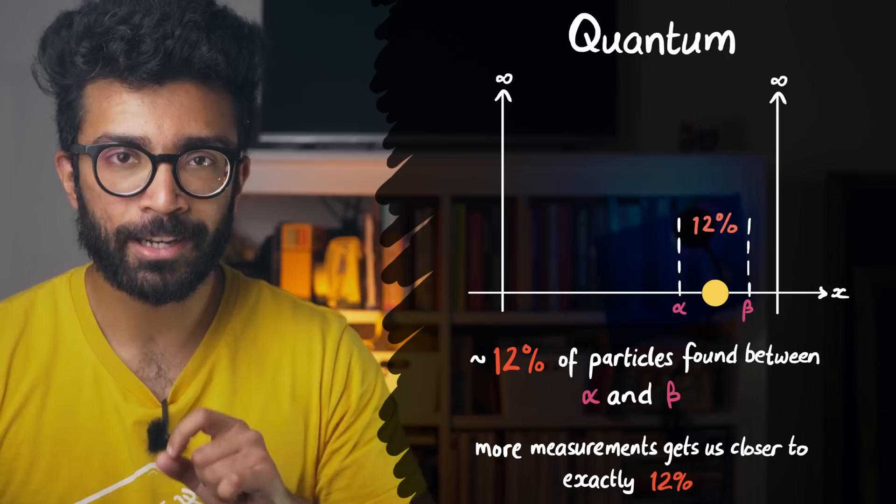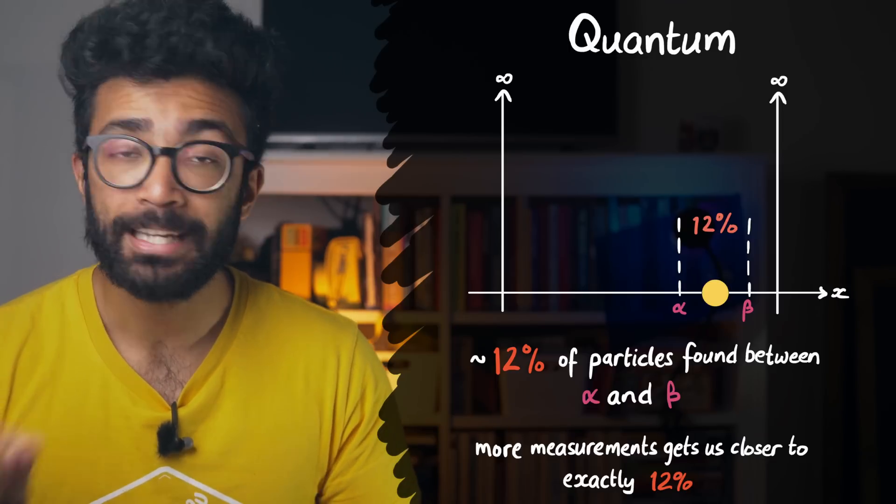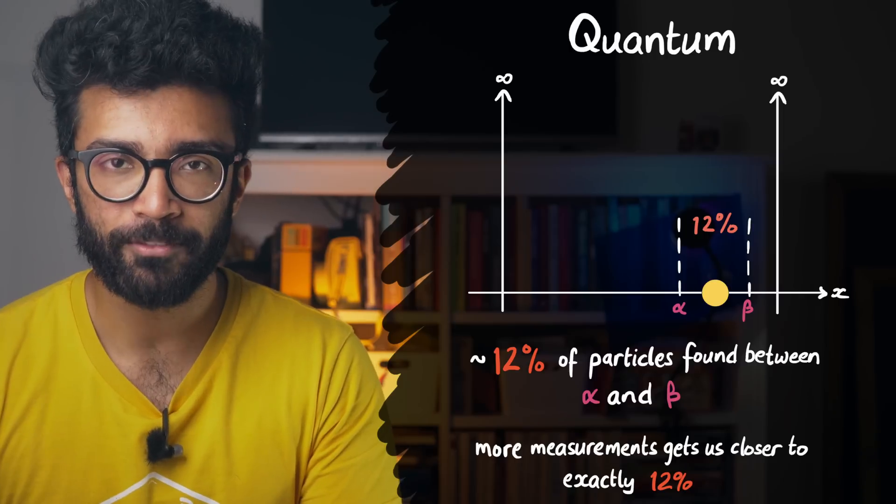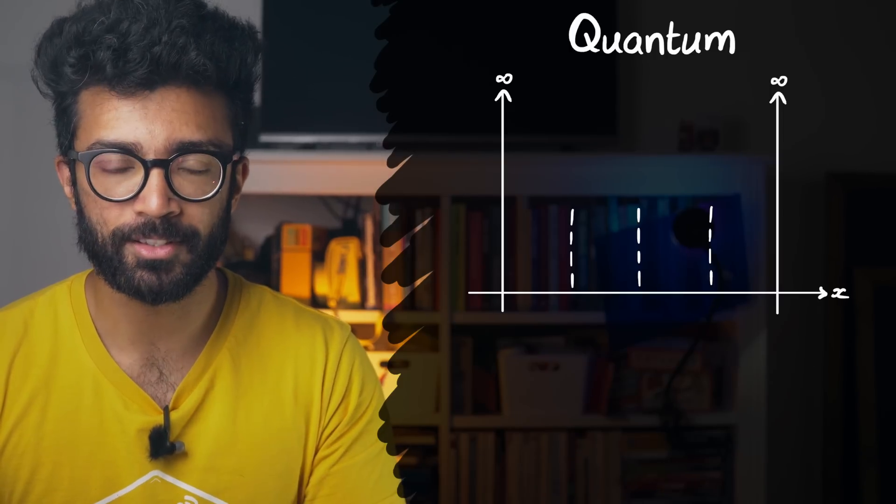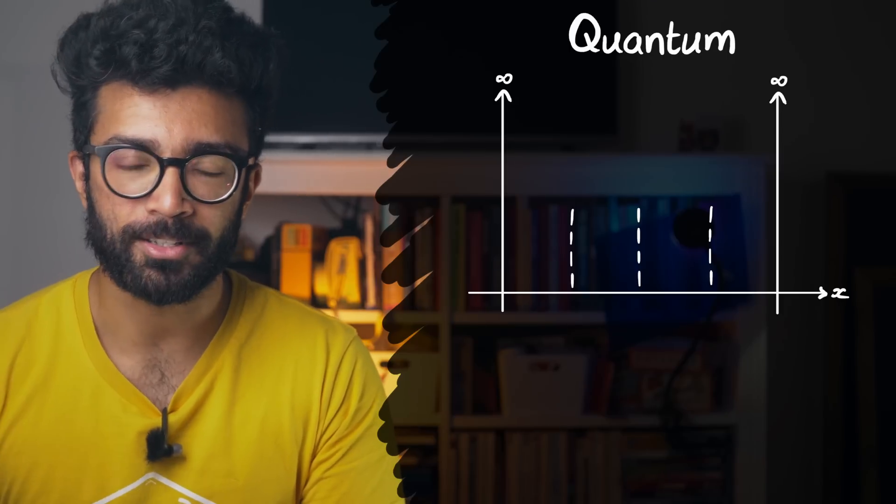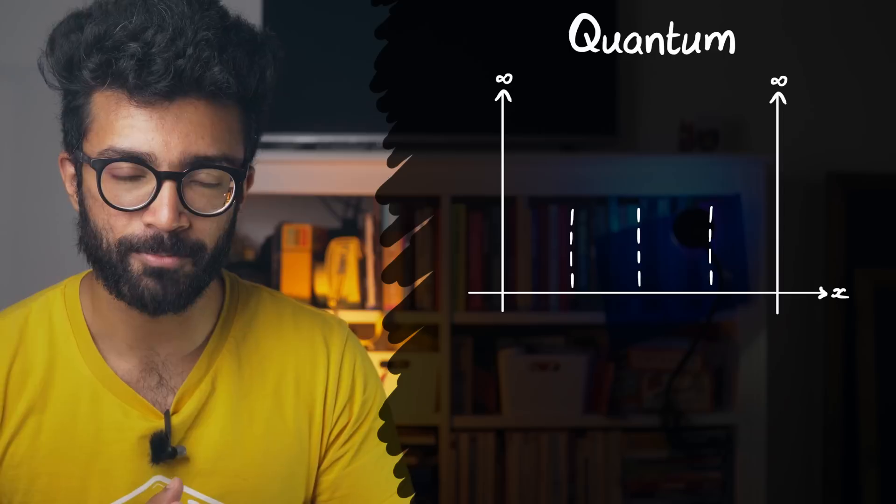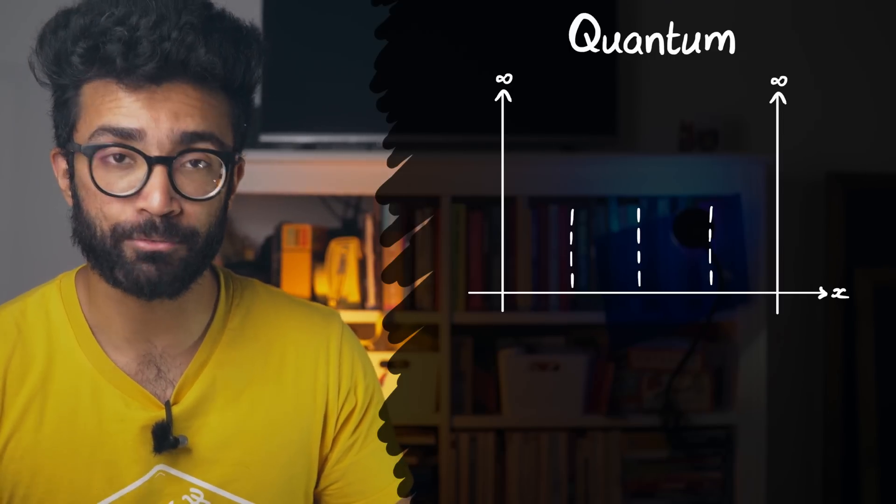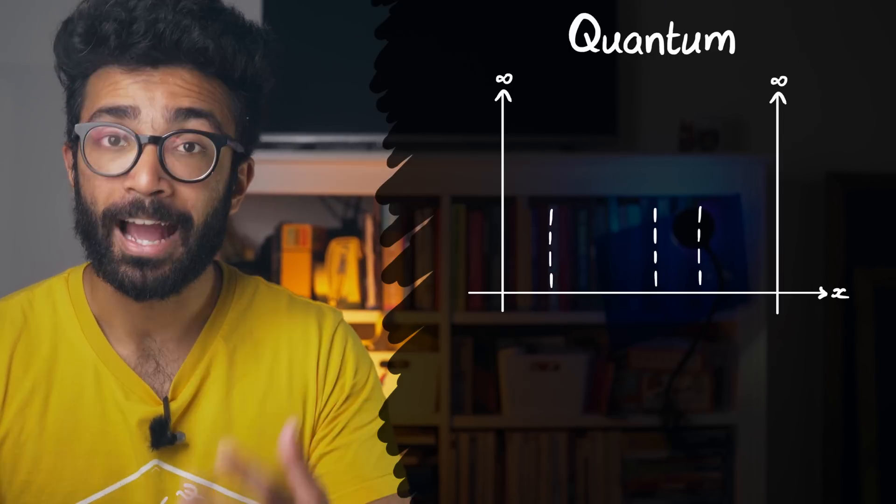And this is where we get a bit closer to the wave function. In our discussion so far, we split the line along which our particle could be found into distinct regions. Well, in reality, we can actually calculate the probability of finding our particle between any two points along our line. Or in other words, we have the ability to split up these regions however we want. How do we do this?